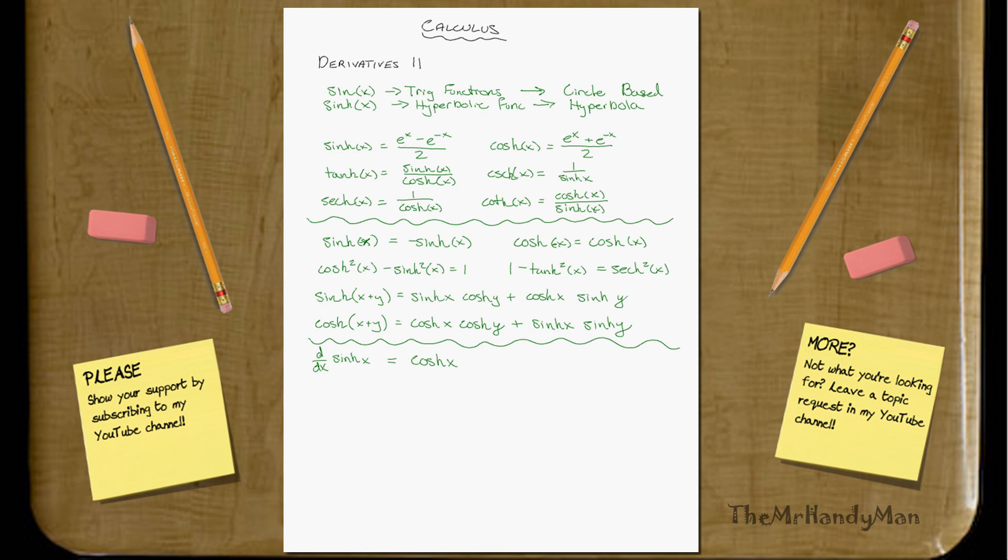Well, that was pretty similar, right? How about d over dx of cosh x. That just equals sinh x. Notice there was no sign change. Yes, things are much different in hyperbolic system.